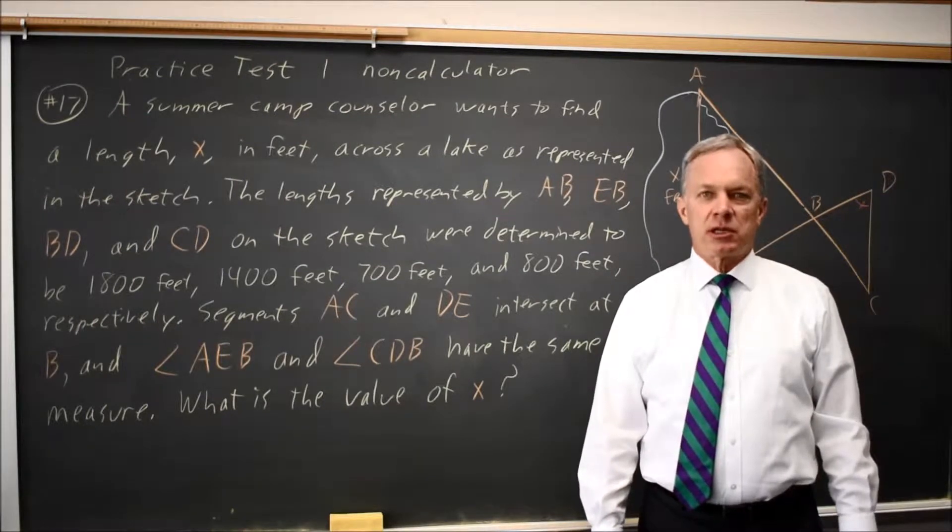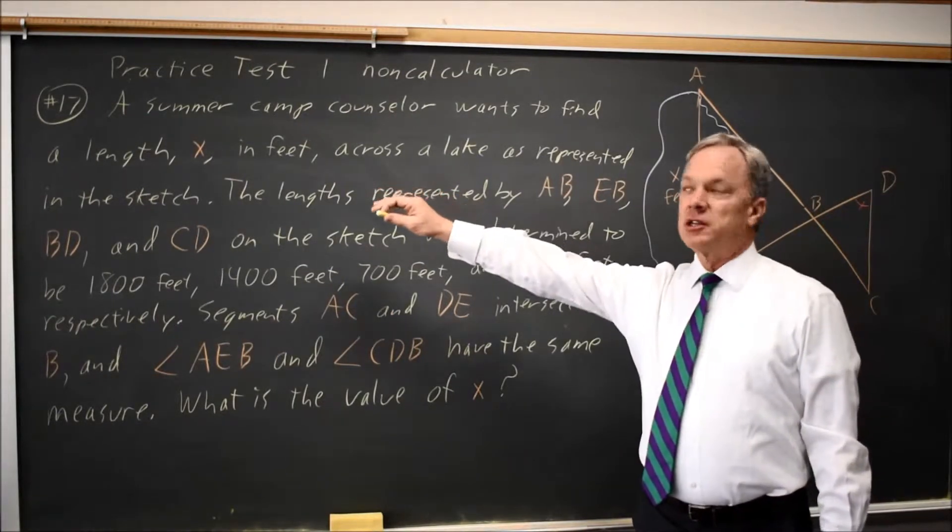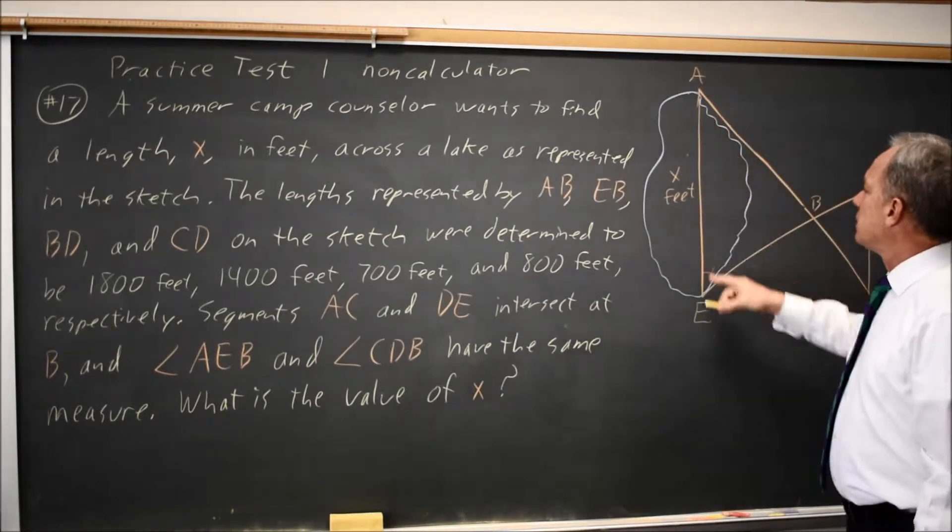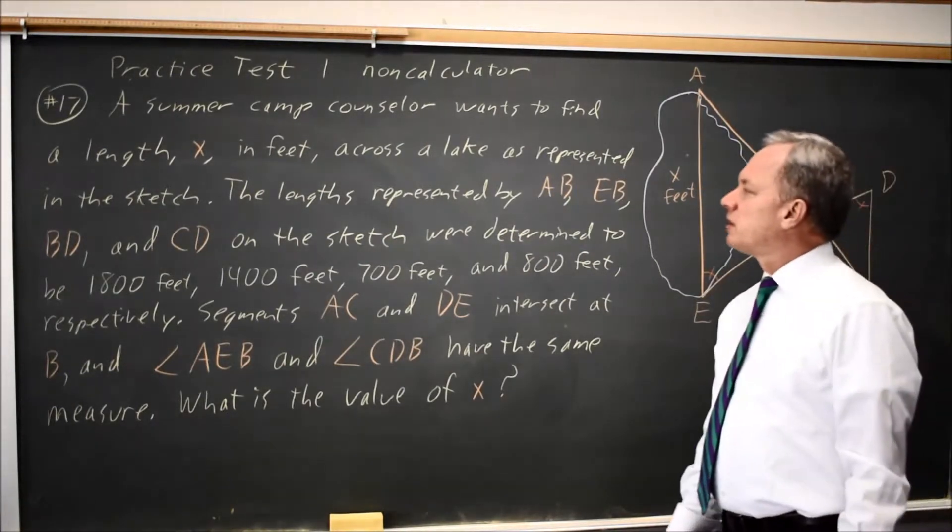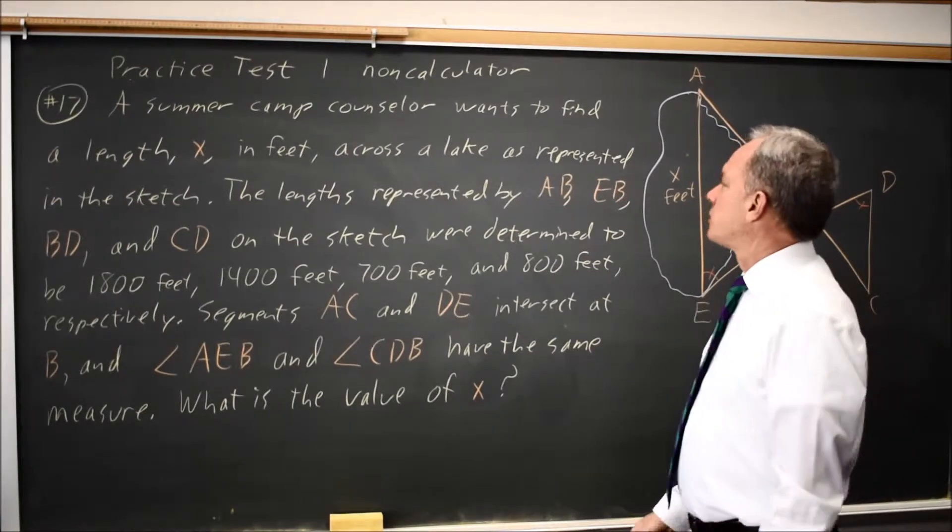This is SAT practice test 1, non-calculator question number 17. College Board gives us a pair of triangles for measuring the distance across a lake, and they give you some of the measurements.